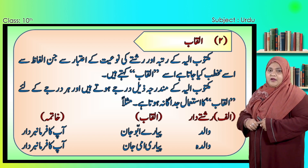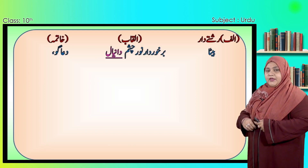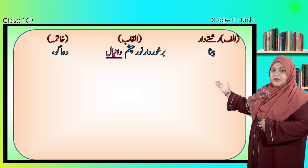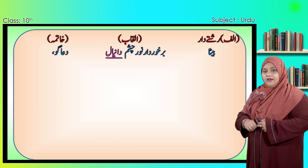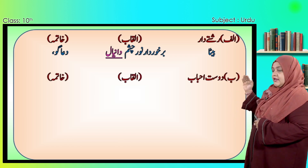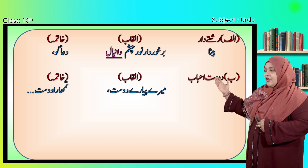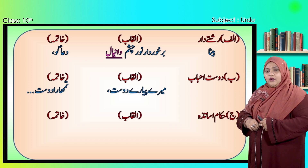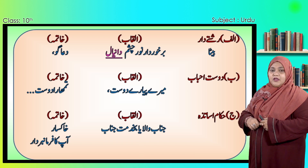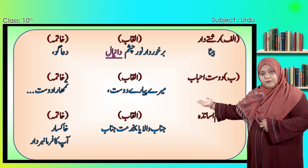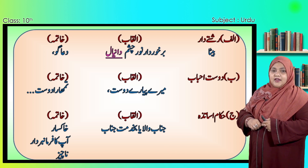اسی طرح سے اگر والدہ محترمہ کو خط لکھنا ہے تو ہمارے القاب کیا ہوں گے: پیاری امی جان، اور ہمارے خاتمے والے الفاظ: آپ کا فرماں بردار۔ اگر بیٹے کو خط لکھا جائے تو القاب کیا ہونے چاہیے: برخوردار نورِ چشم آپ کا نام لکھنا ہوگا، جیسے برخوردار نورِ چشم دانیا، اور خاتمے والے الفاظ: دعاگو۔ دوست اور احباب کو لکھے جانے والے القاب: میرے پیارے دوست، اور خاتمے والے الفاظ: تمہارا دوست۔ حکام یا اساتذہ کو لکھے جانے والے القاب: جنابِ والا یا پھر بخدمت جناب، اور خاتمے والے الفاظ: خاکسار، آپ کا فرماں بردار یا پھر ناچیز۔